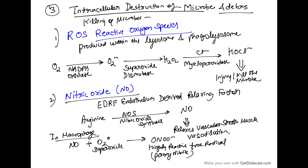The third step is intracellular killing. When inside the neutrophil or macrophage, there is intracellular destruction of the microbe and debris. The first mechanism is by reactive oxygen species produced within the lysosome and phagolysosome. O2 in the presence of NADPH oxidase is converted to O2⁻ (superoxide radical). Superoxide dismutase converts it to H2O2, then in the presence of chloride and myeloperoxidase enzyme, it converts to HOCl⁻, which kills the microbe. Myeloperoxidase is very important — deficiency leads to a defect in microbial killing.